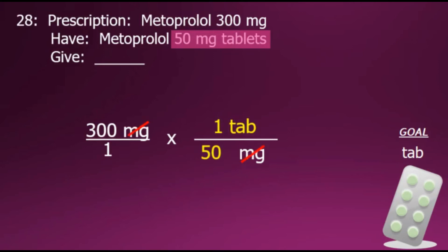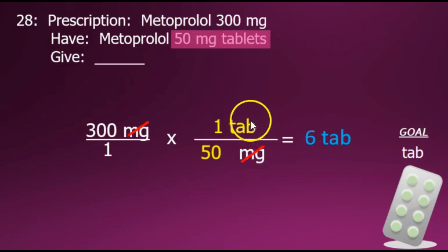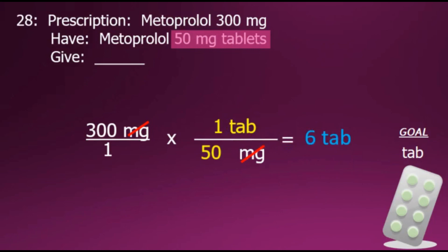Canceling out the common factor in the numerator and denominator, which is equal to 1, we'll then multiply the numerators together for the new numerator, multiply the denominators together for the new denominator, and the last step will be to simplify this fraction by taking numerator divided by denominator with our remaining unit of tabs, which was our goal. Final answer: 6 tabs.